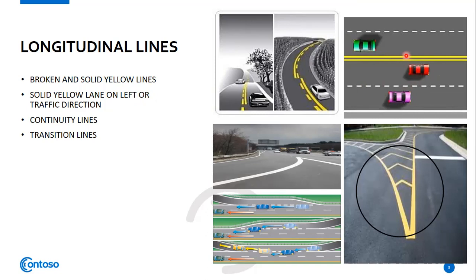Next is the continuity line. When the driver sees continuity lines on the left side, it means the lane is ending or exiting and the driver must change lanes if they want to continue in the current direction. If the continuity lines are on the right side, that means the lane will continue and is unaffected, as shown in the picture where the continuity line is on the right side.